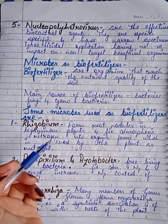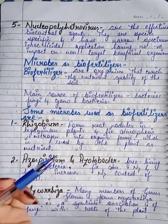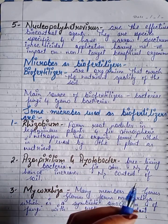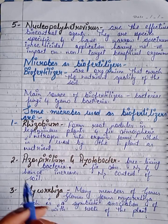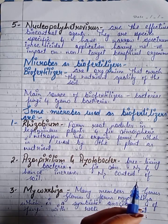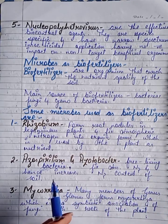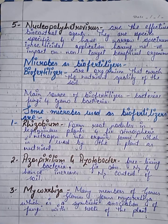Some microbes used as biofertilizers: first is Rhizobium. Rhizobium forms root nodules in leguminous plants. This free-living bacteria fixes atmospheric nitrogen and hence increases the nitrogen content of the soil.